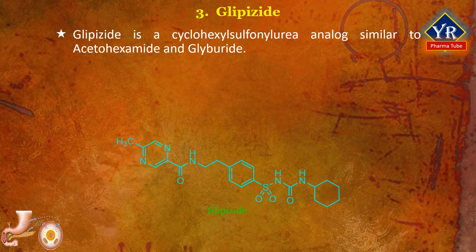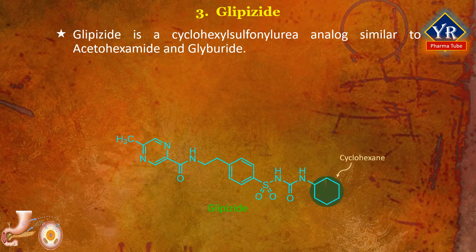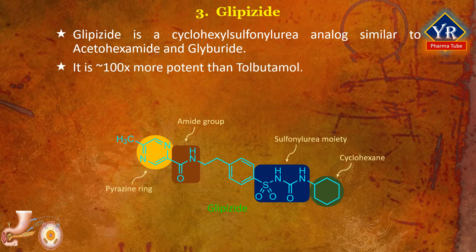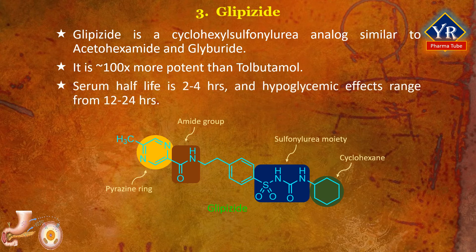The next drug is glipizide. Glipizide is a cyclohexyl sulfonylurea analog similar to acetohexamide and gliburide. It differs from gliburide in the structure of the amide region of the molecule, in which the 2-methoxy-5-chlorobenzoic acid part is replaced with 6-methylpyrazine carboxylic acid. It is approximately 100 times more potent than tolbutamide. It is rapidly absorbed on oral administration with a serum half-life of 2 to 4 hours, whereas the hypoglycemic effects range from 12 to 24 hours.